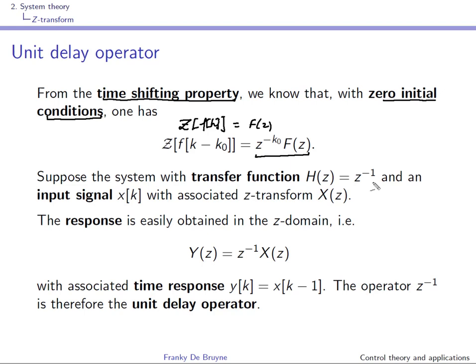For instance, if you have a system with transfer function z^(−1) and compute the response to an input signal x(k) with z transform X(z), the response is Y(z) = H(z)·X(z) = z^(−1)·X(z). Taking the inverse z transform, you obtain y(k) = x(k−1). So z^(−1) is really the unit delay operator.